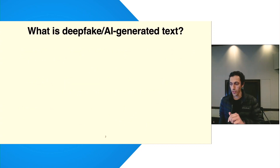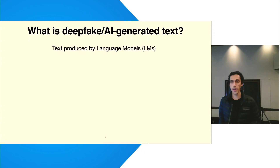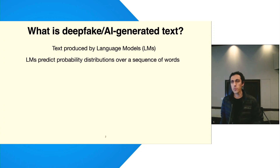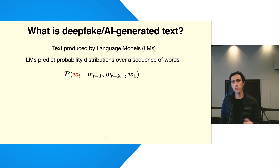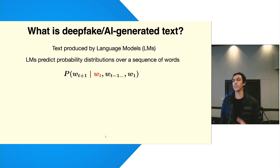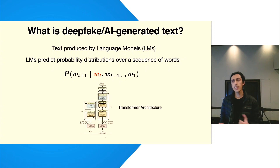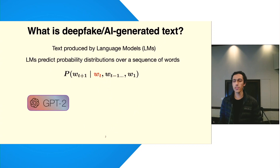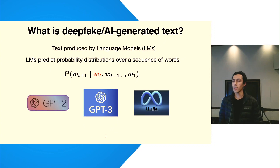We define deepfake, or AI-generated text, as any text that is produced by newer language models, or LMs in short. Language models are models trained to predict probability distributions over a vocabulary given some linguistic context. For language generation, the model samples a word from the predicted distribution, and is then conditioned on that and all previously sampled words to generate another word, and so on. Since 2017, transformers have been the dominant architecture for language modeling, and some popular transformers are models like GPT-2, GPT-3, LLaMA, and many more.